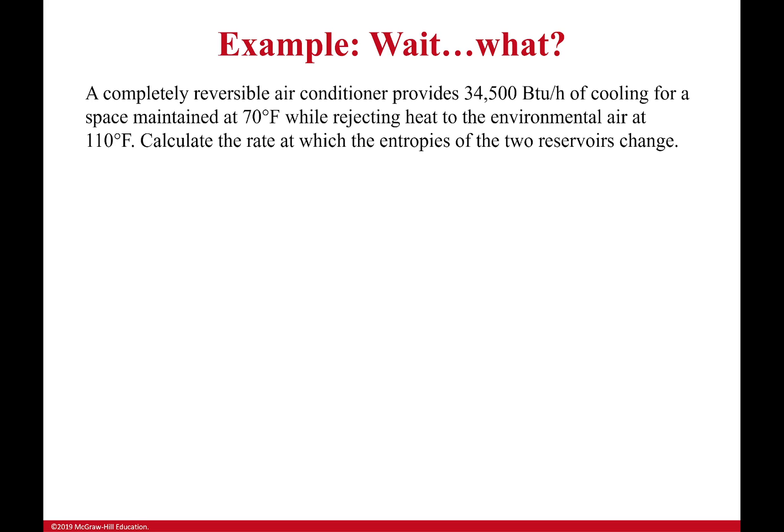In this one, I have a completely reversible air conditioner - I like that, that's a good and a very important word. It provides 34,500 BTUs per hour of cooling. Boo, it's English units. For a space maintained at 70 degrees Fahrenheit while rejecting heat to the environmental air at 110 degrees Fahrenheit, we want to calculate the rate at which the entropies of the two reservoirs change. Now, before I go any further, I want to zoom in on this completely reversible term here.